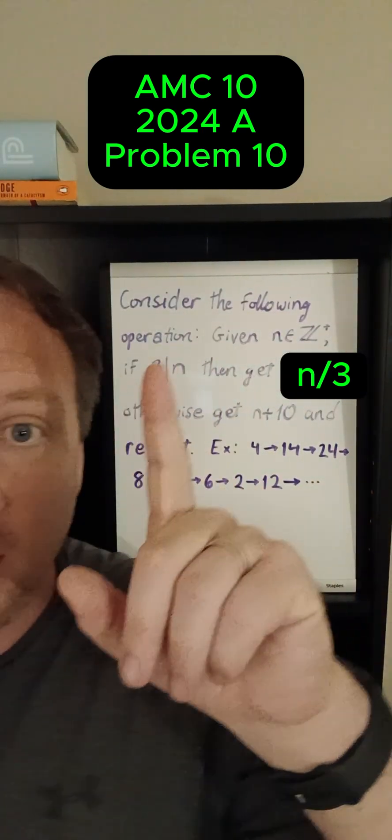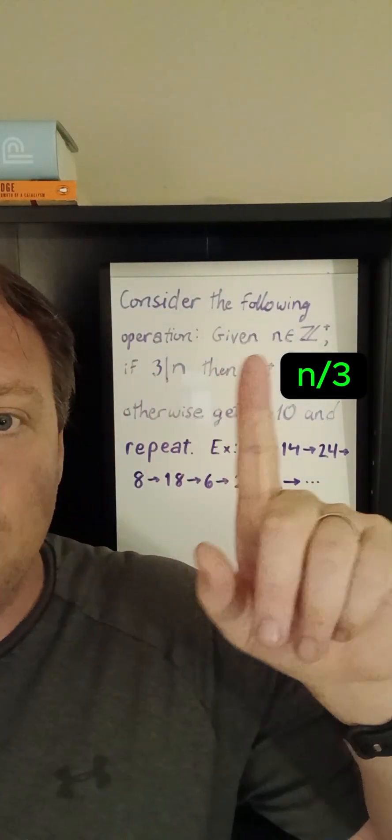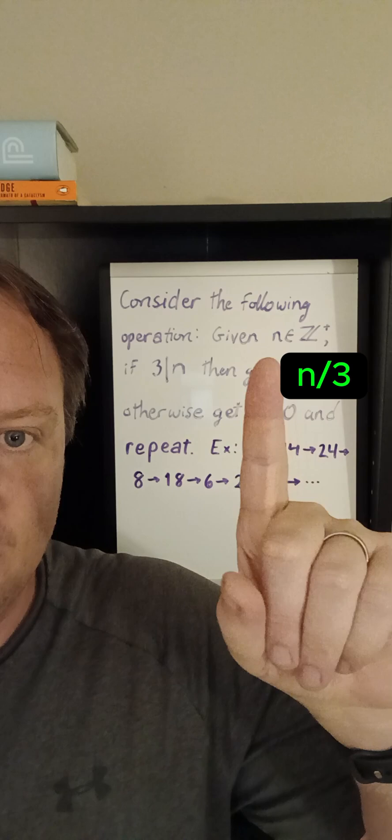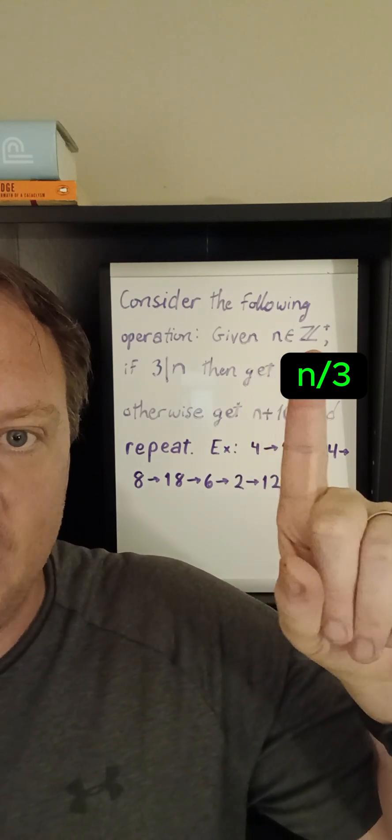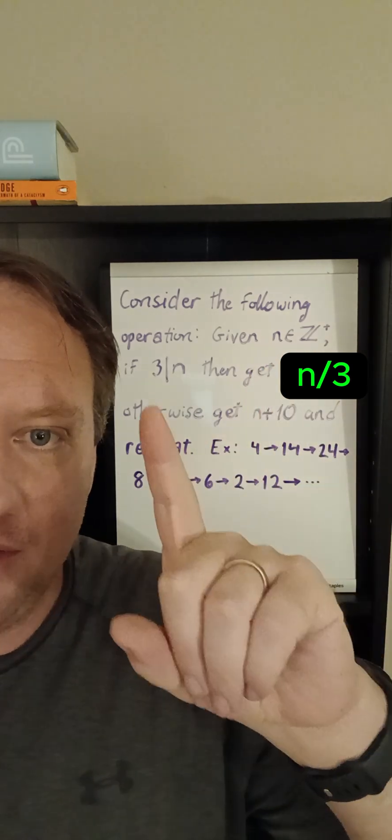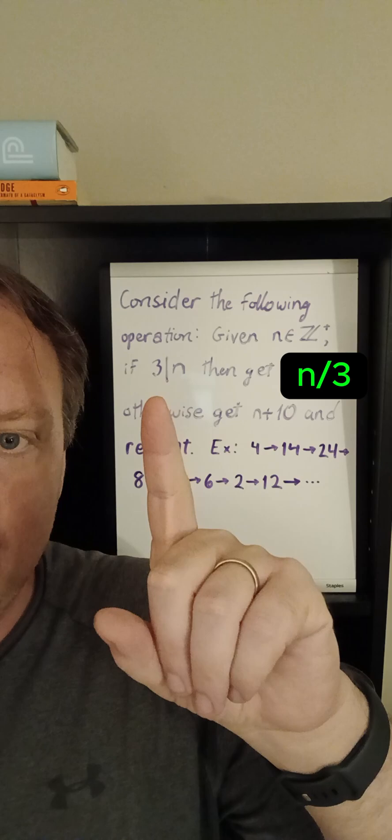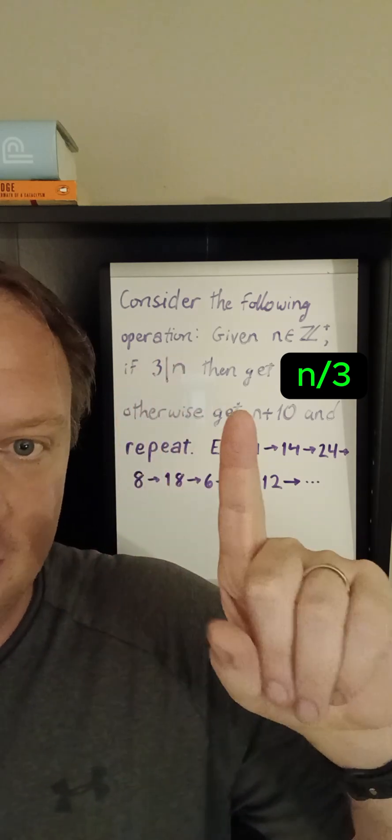I'm doing competition math and in this problem we want to consider the following sequence of positive integers. This is just my notation to abbreviate that n is a positive integer if it is divisible by 3. That's what this notation means.